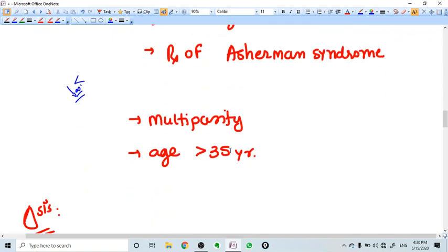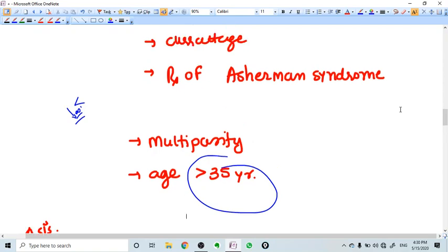With age, the endometrium becomes thin and that is also a reason of increased incidence of adherent placenta in age more than 35. If there is multiparity, then also continuously the endometrium is getting thin, so we have a higher incidence of placenta adherent.